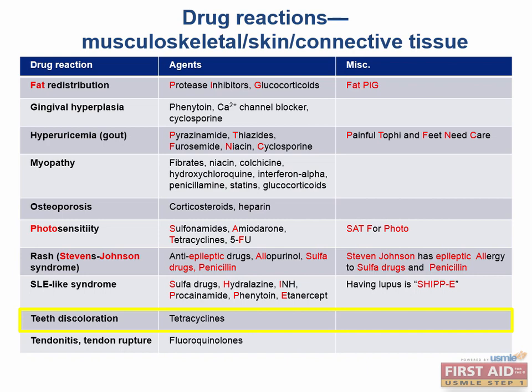There are quite a few drugs in this chart, but the one I want to point out is tetracyclines. These can cause teeth discoloration, and it can be presented on boards in multiple ways. Here's a practice question: a five-year-old girl comes in with her mother, who is obviously distressed because her daughter's teeth have turned grayish after taking a medication. What drug is most likely responsible? You should automatically be thinking tetracyclines — confidently put tetracycline as the answer for teeth discoloration in a young child and move on.